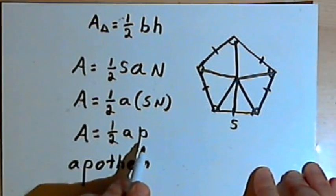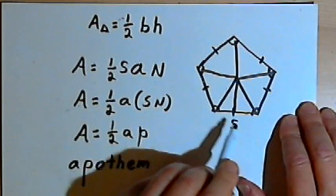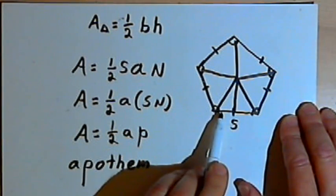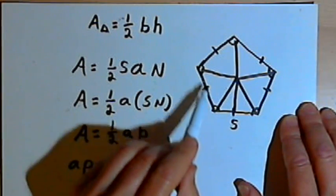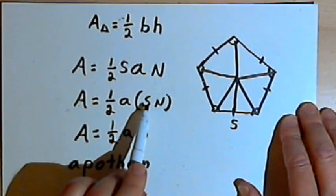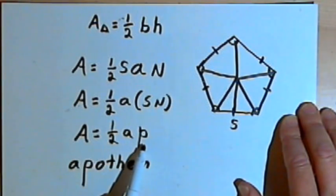P stands for perimeter. If I want to know the perimeter of a polygon, I'll multiply the length of one of the sides, S, times the number of sides, which would be N. So I'll multiply S times N, and that will give me the perimeter.